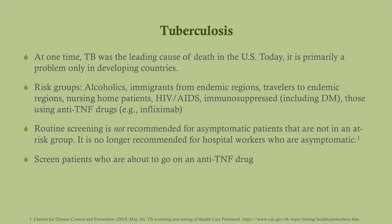At one time TB was the leading cause of death in the United States before we started coming out with all these great antibiotics. TB is highly contagious and it is very deadly if it's not treated. Fortunately now we can treat it, but primarily it is a problem in developing countries. In developing countries they're not as fast to treat it and so it just gets spread around more. Anytime with an infectious disease you're able to treat something very quickly, naturally the incidence is going to go down because it's just not circulating around as much.